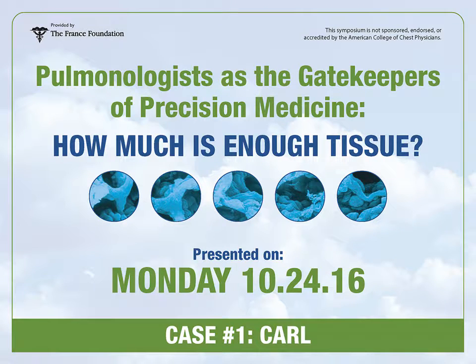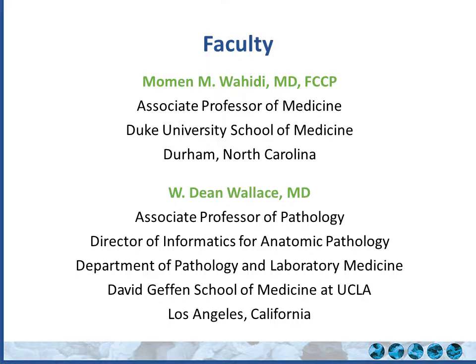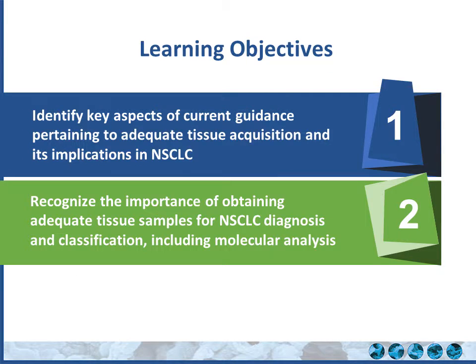Good morning everyone. Welcome to the session: Pulmonologists as the gatekeepers of precision medicine — how much is enough tissue? My name is Momin Wahidi, I'm an interventional pulmonologist at Duke University Medical Center. I have the pleasure of having Dr. Dean Wallace, a pathologist with interest in lung pathology who is the chief of pulmonary pathology at UCLA. Today's learning objective is to discuss current guidelines pertaining to adequate tissue acquisition and its implication in non-small cell lung cancer, and to recognize the importance of obtaining adequate tissue samples for diagnosis, including molecular analysis.